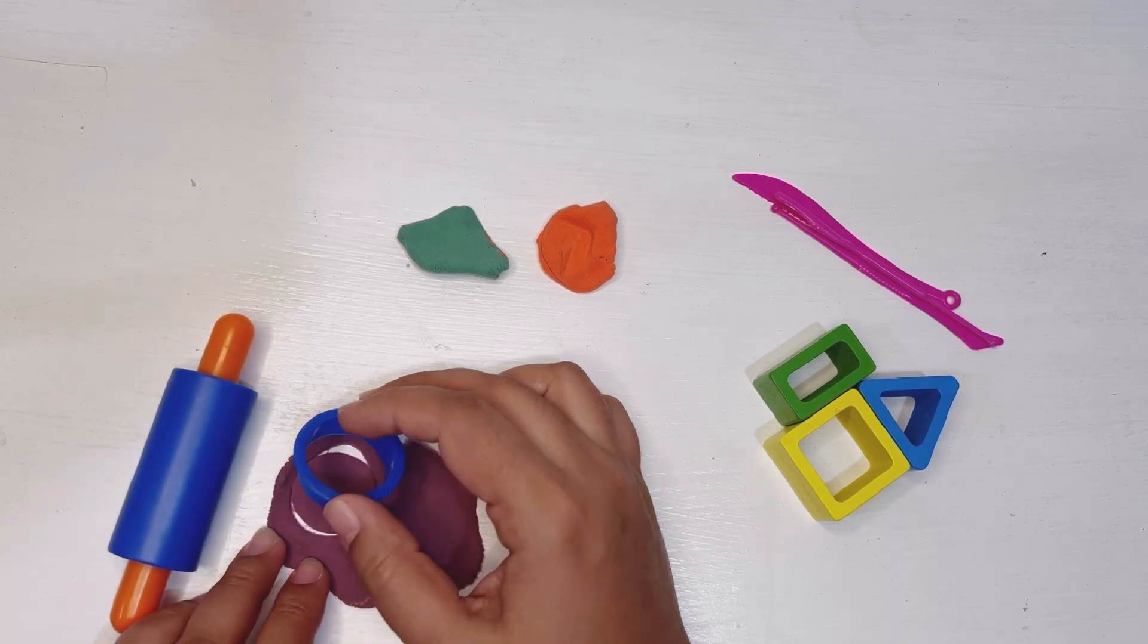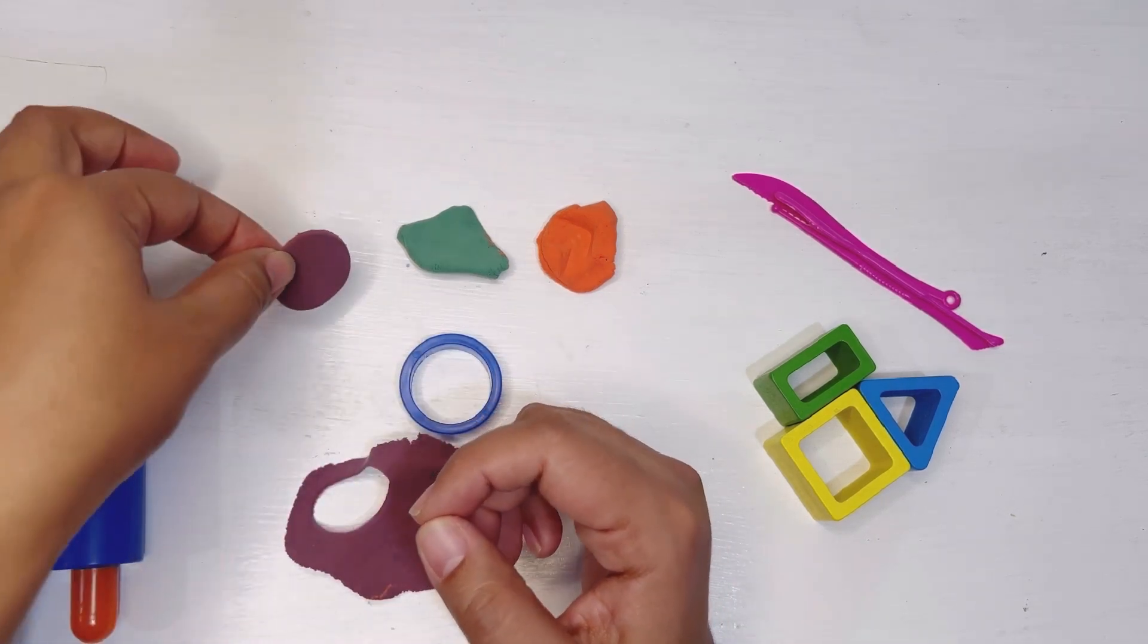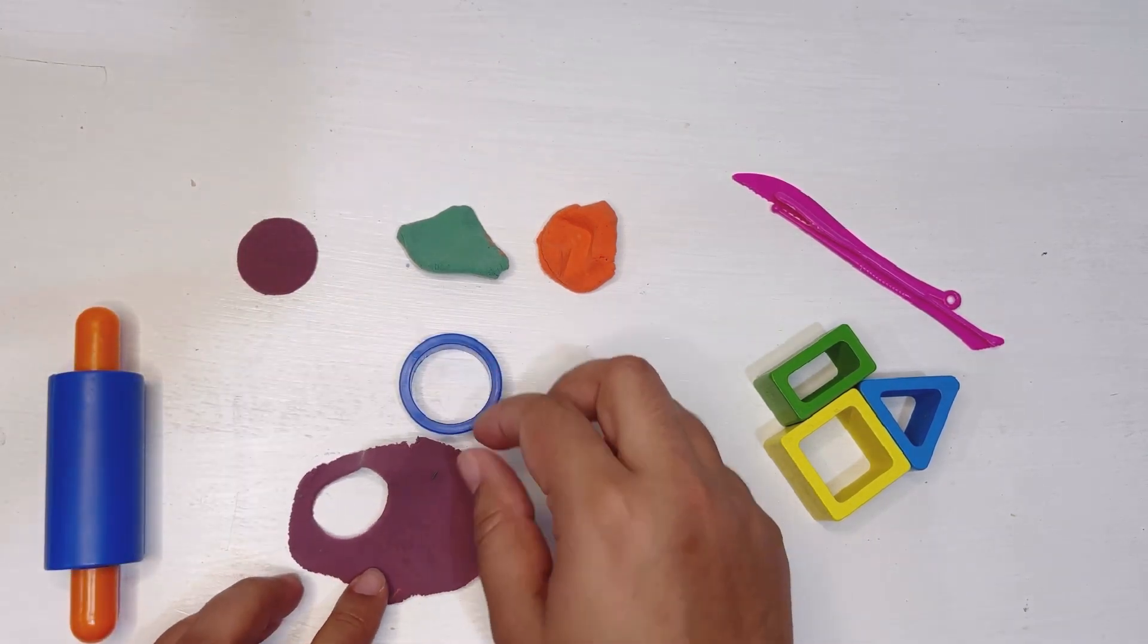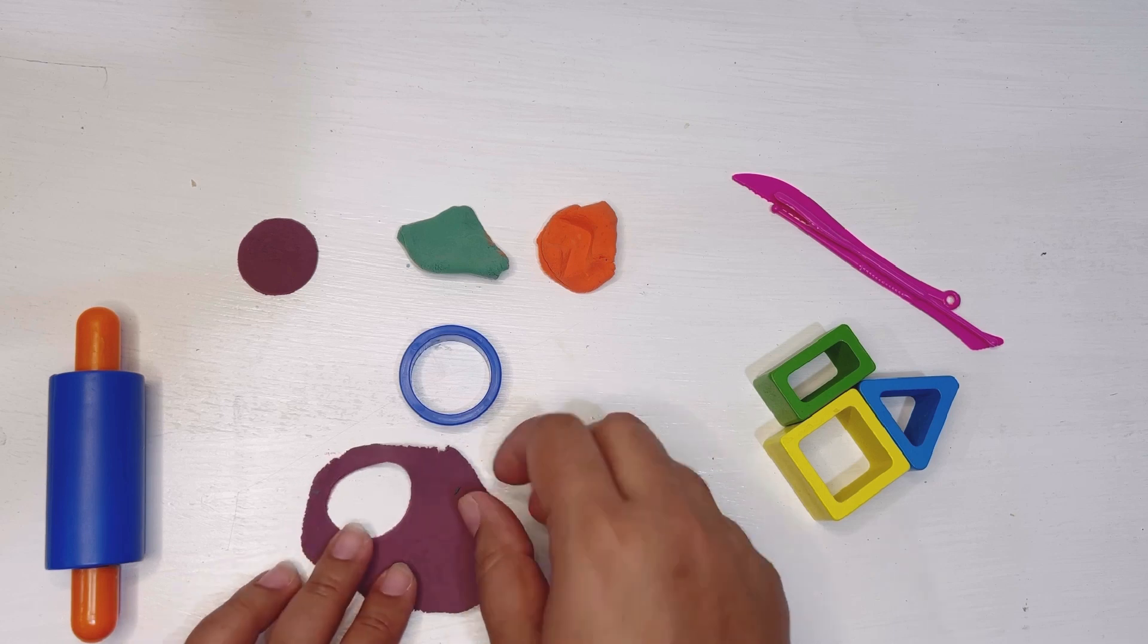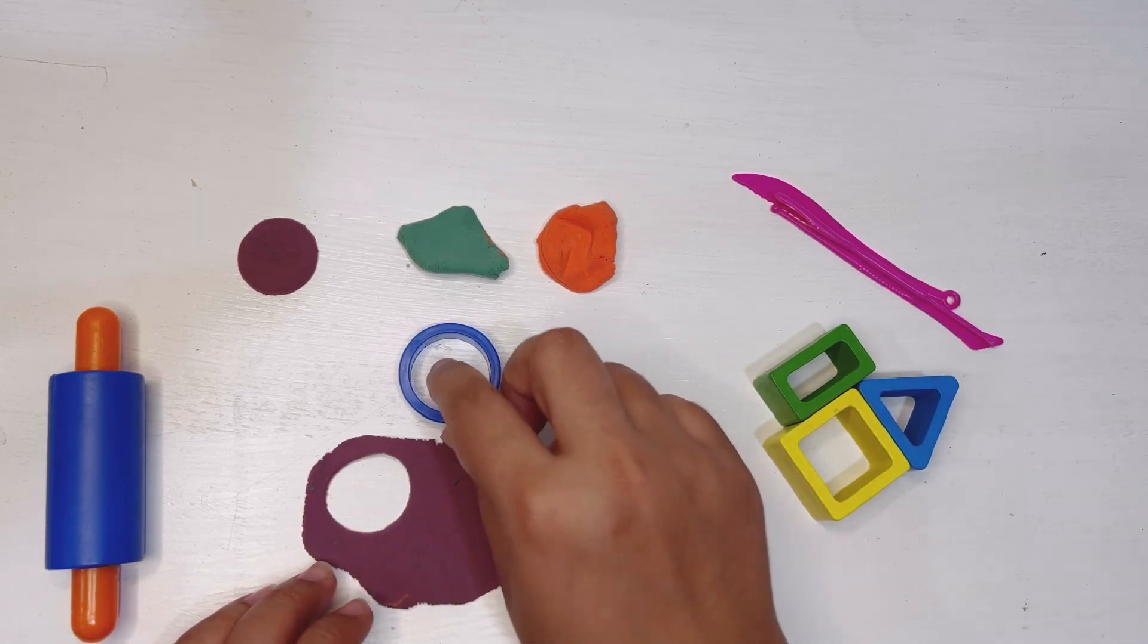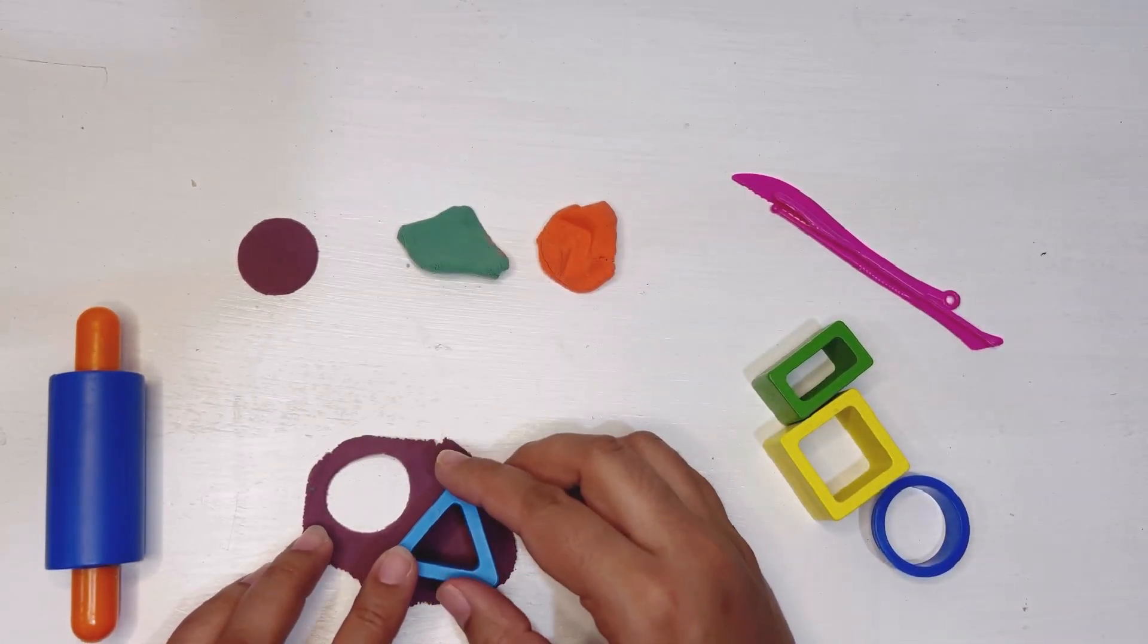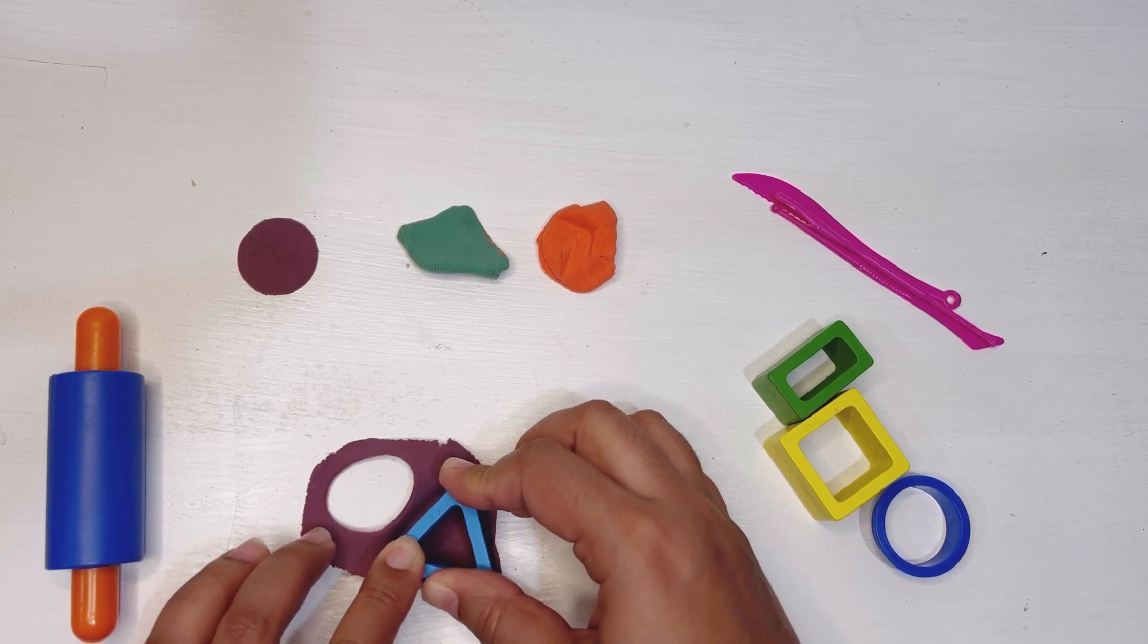There you go, here we have purple circle. Let's do our next shape. We will make one more shape with this purple play-doh. Here is the triangle, let's make triangle with this play-doh.